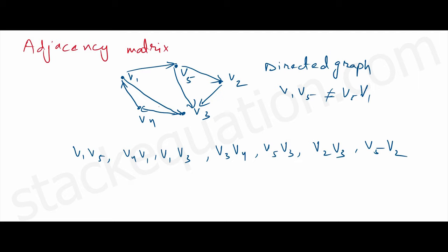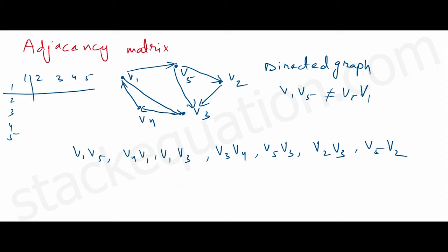An adjacency matrix is a simple idea where we represent these edges in the form of rows and columns. We set up a 5×5 grid — rows and columns labeled 1 through 5 — and draw lines to differentiate them.